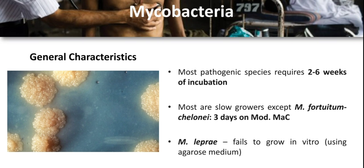Most pathogenic species of the family Mycobacteriaceae require 2–6 weeks of incubation. Most are slow growers except for Mycobacterium fortuitum complex, which grows in at least 3 days on a modified MacConkey agar. Mycobacterium leprae fails to grow in vitro using standard agar medium.